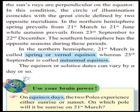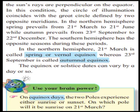On equinox, the sun's rays are perpendicular on the equator. In this condition, the circle of illumination coincides with the great circle defined by two opposite meridians. In the northern hemisphere, spring prevails from 21st March to 21st June, while autumn prevails from 23rd September to 22nd December. The southern hemisphere has the opposite seasons during these periods. In the northern hemisphere, 21st March is called spring or vernal equinox, whereas 23rd September is called autumnal equinox. The equinox or solstice dates can vary by a day or so.